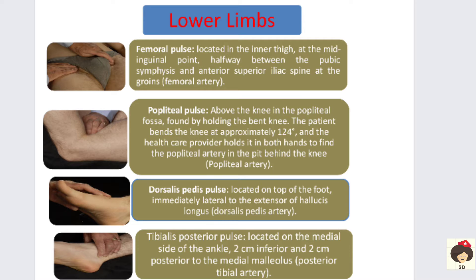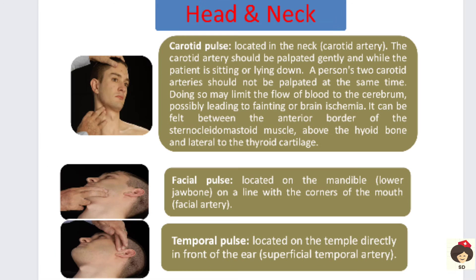The dorsalis pedis pulse is on the top of the foot, on the dorsal surface, lateral to the extensor hallucis longus muscle, where the dorsalis pedis artery runs. The posterior tibial pulse is below the ankle on the medial side, approximately 2 cm inferior and 2 cm posterior to the medial malleolus, where the posterior tibial artery runs.